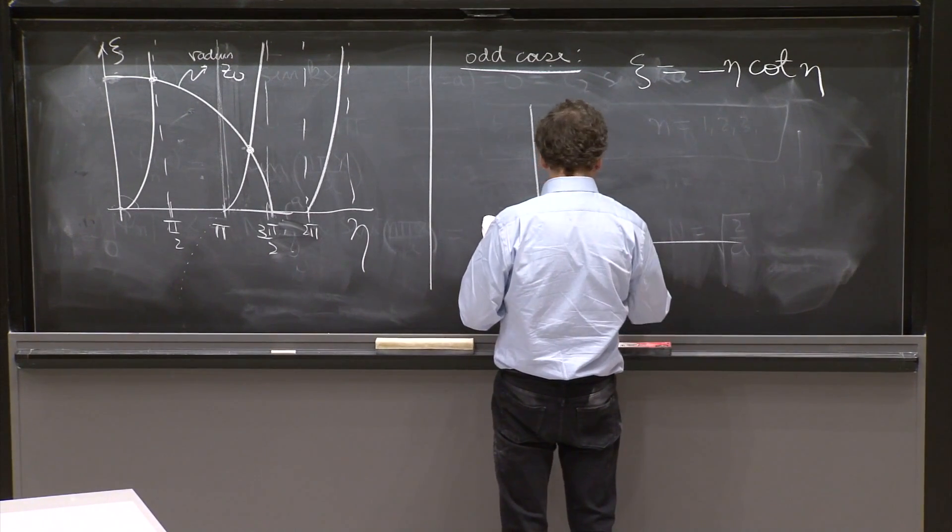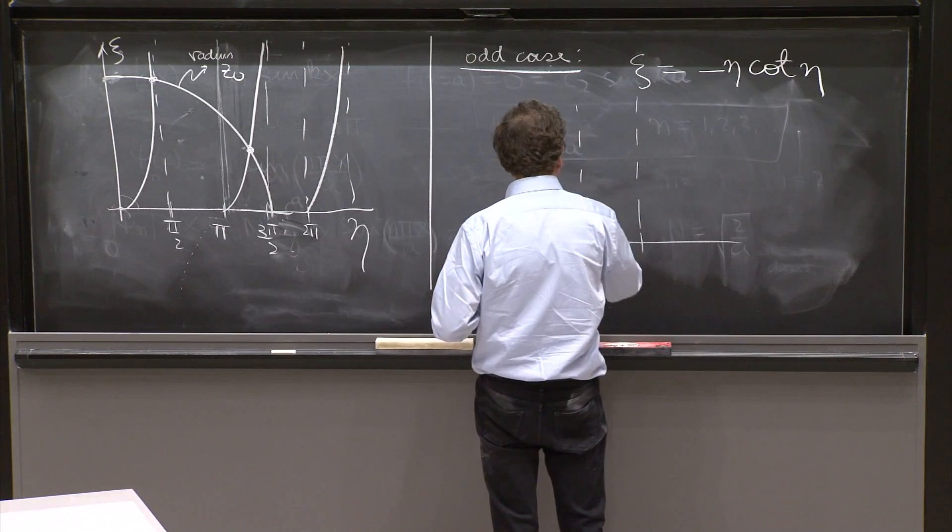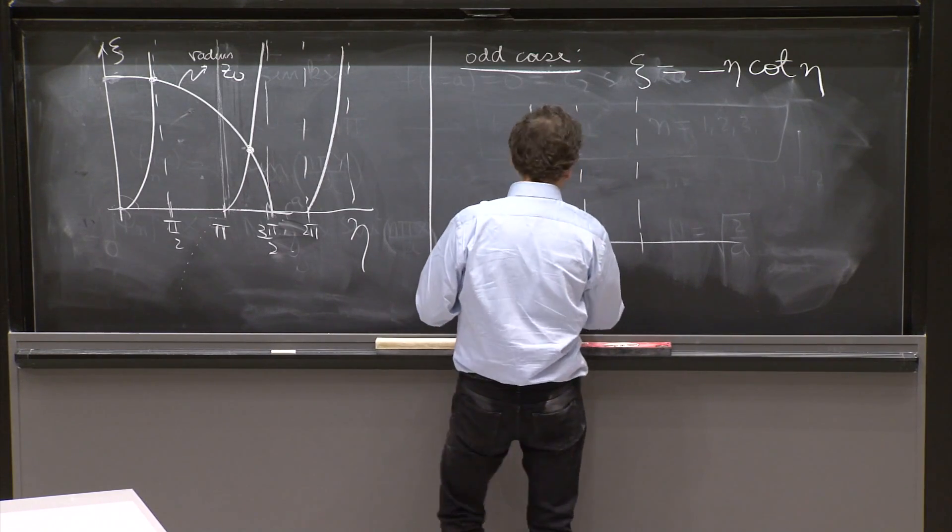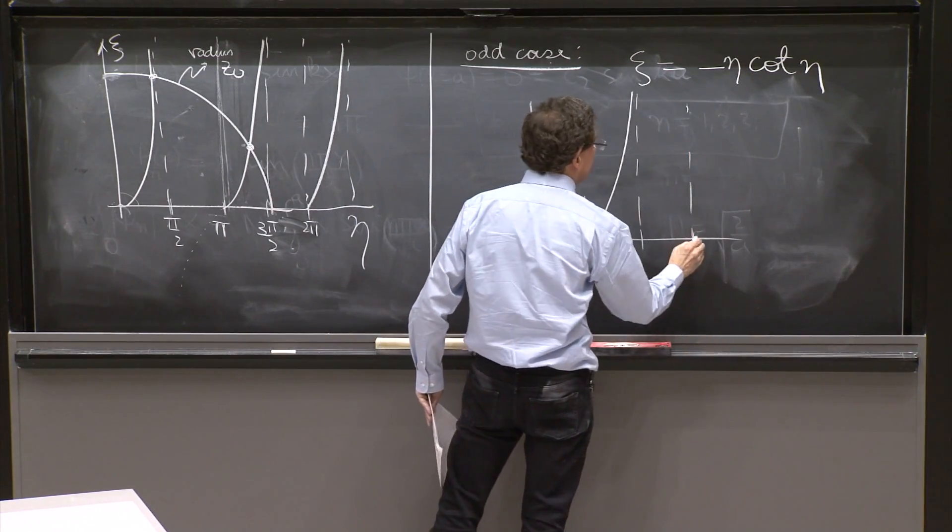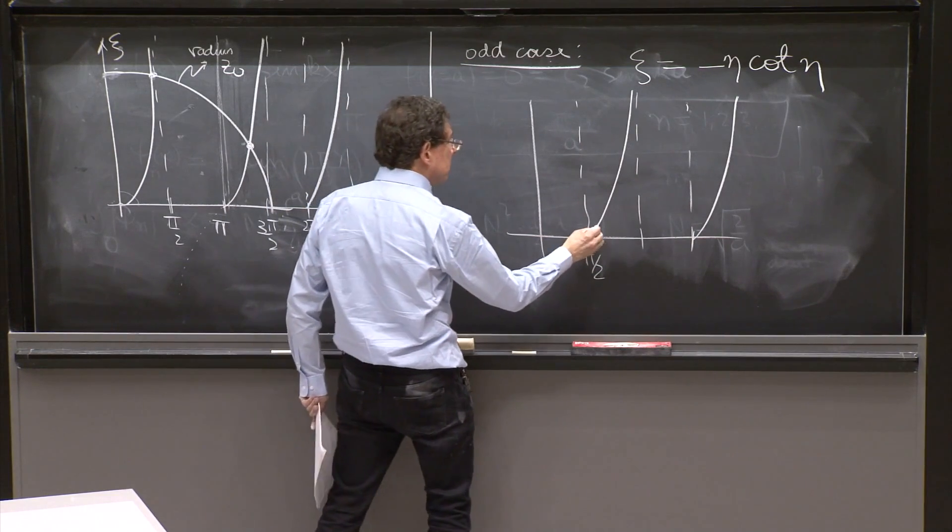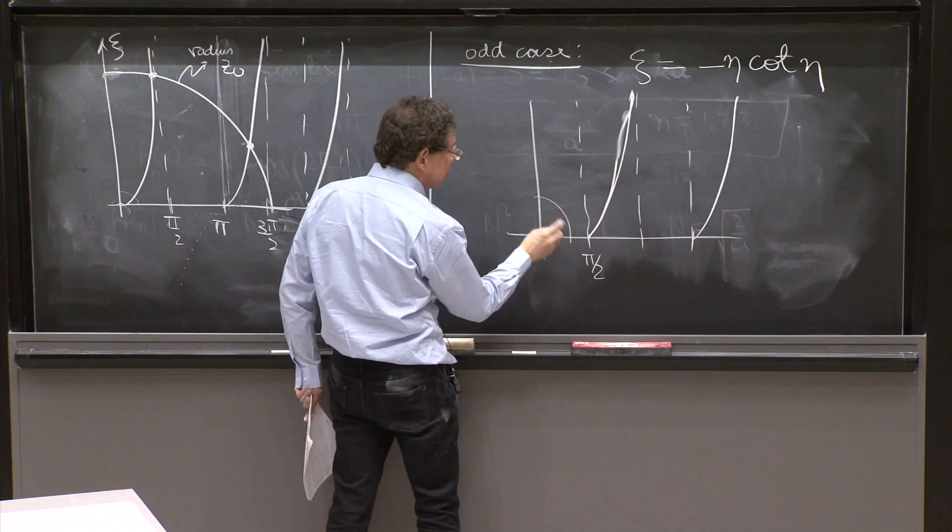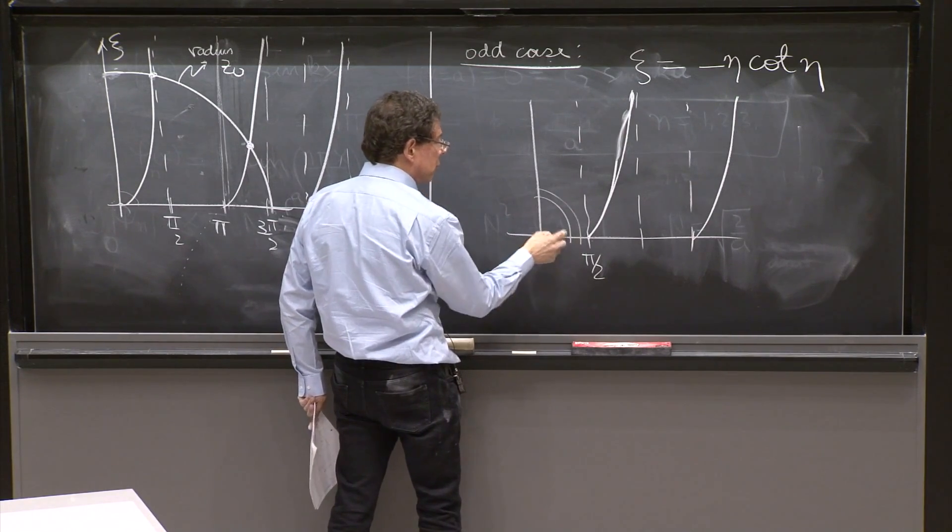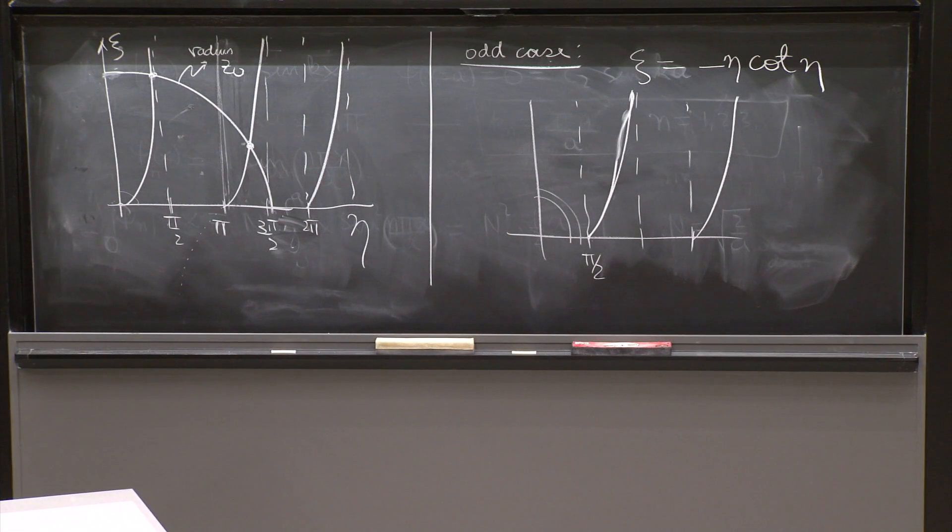The answer for the odd case is that psi is equal to minus eta cot eta. And in that case, I'll give you a little preview of how this cot looks. It looks like this. And then there are more branches of this thing. So for the odd solution, you have these curves. And if you have a circle, sometimes you don't have a solution. No, it doesn't intersect this. So these odd solutions, you will see and try to understand, they don't always exist.